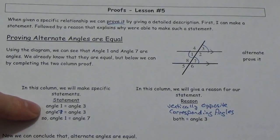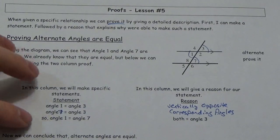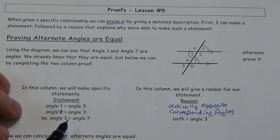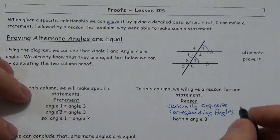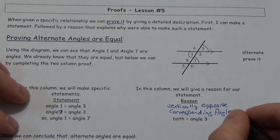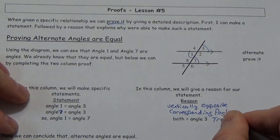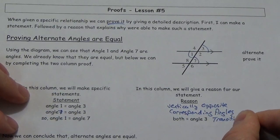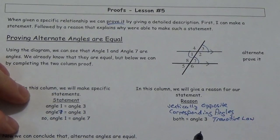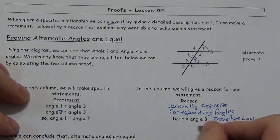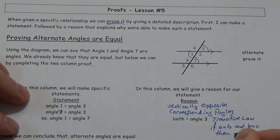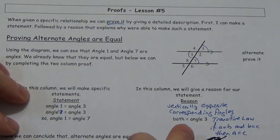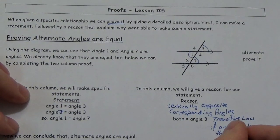Corresponding angles between parallel lines. So then we can assume that angle one is equal to angle seven, because they're both equal to angle three. If you really want to get nerdy about this, this is the transitive law — basically, if A equals B and B equals C, then A equals C. Equality translates through these expressions.